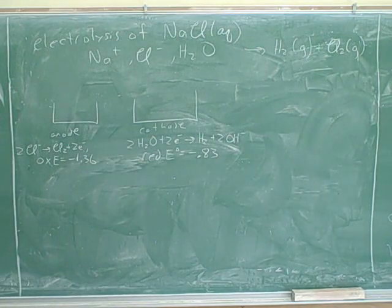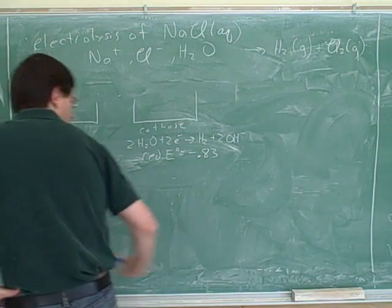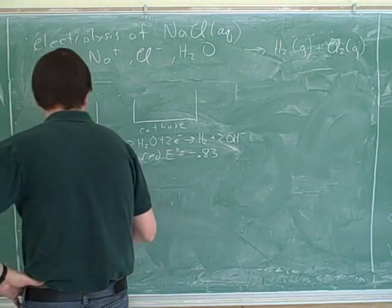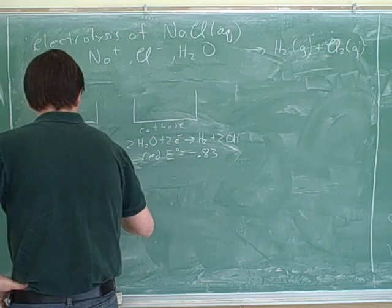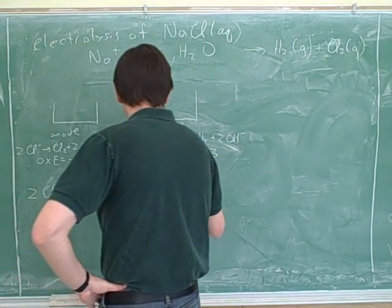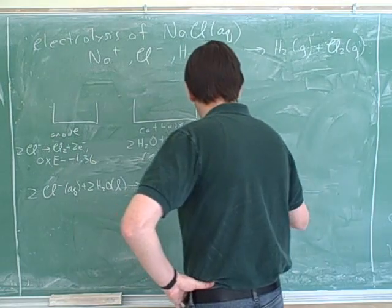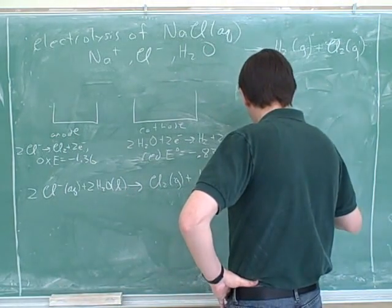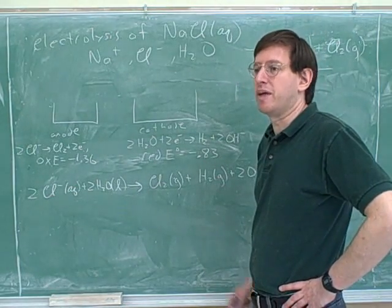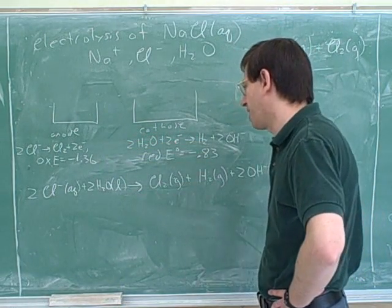What starting materials do we have here? Cl- ion, 2Cl- ion, and 2 water. Are the electrons balancing? Yes. We have to check that. If the electrons didn't balance, we would have to do some multiplication first to make them balance. But the two electrons balance from the two half reactions.